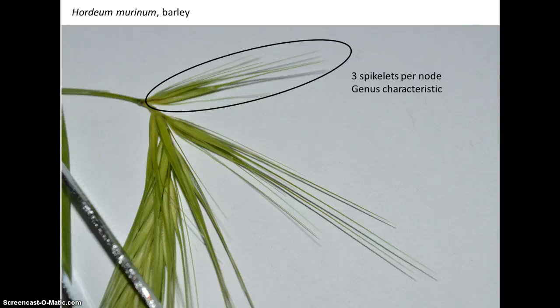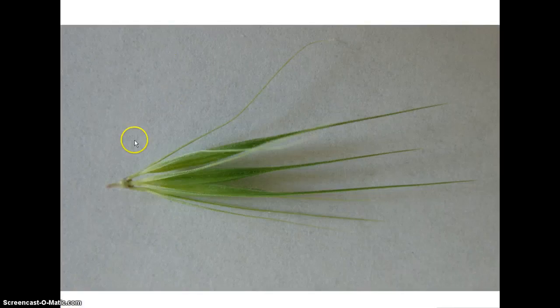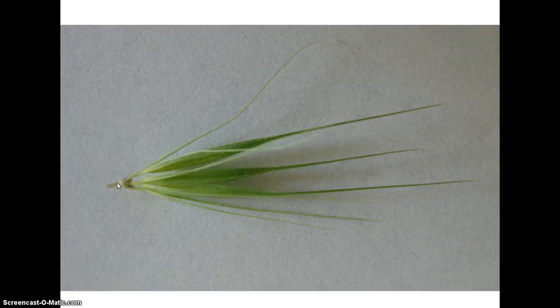Moving on to barley, which is in the genus Hordeum, we have an unusual situation where at each node or level on the stem and the inflorescence, we have three spikelets — three entire spikelets attached. In Hordeum, we have only one floret per spikelet.